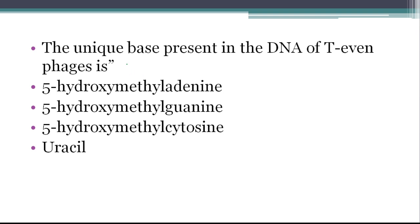Now the next question is the unique base present in the DNA of T-even phages. So we have seen yesterday that cytosine, where cytosine is a normal base, nitrogenous base. In this DNA, instead of T-even phages, there is a base which we call as 5-HMC, that is 5-hydroxymethylcytosine. So this is an unusual nitrogenous base which is found in the DNA of T-even phages. So our correct option here is 5-hydroxymethylcytosine.